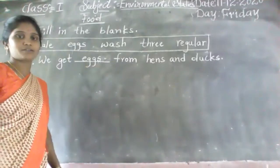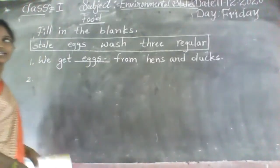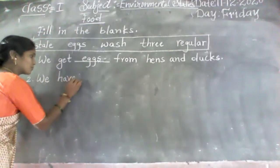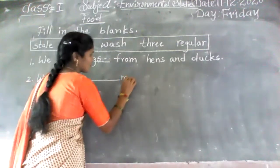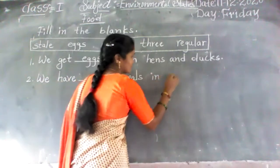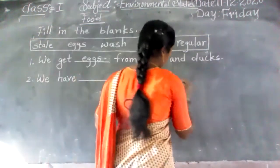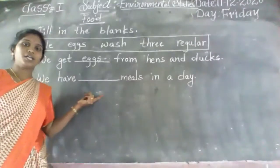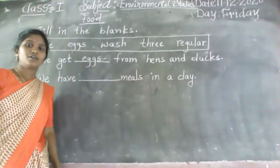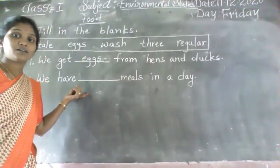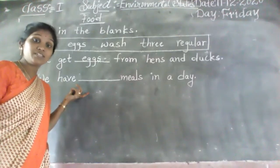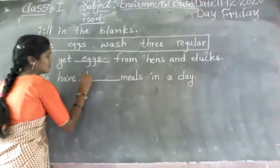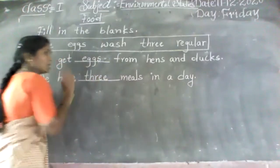Write down 'eggs' in the first blank, write properly, touch the line. Next, second one: we have dash in a — how many? A tree. Write the spelling: T-R-E-E, tree.